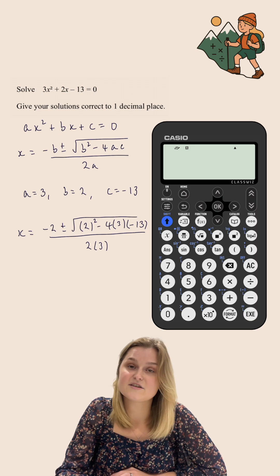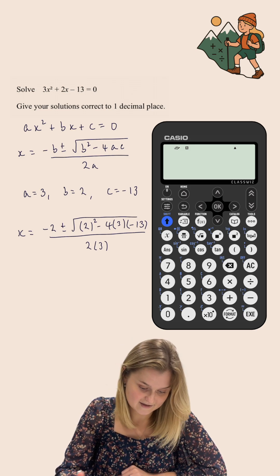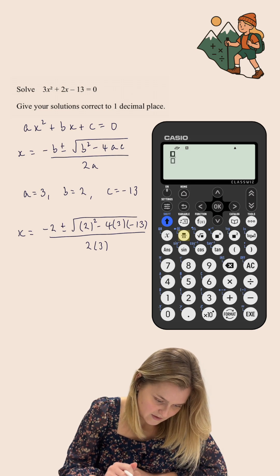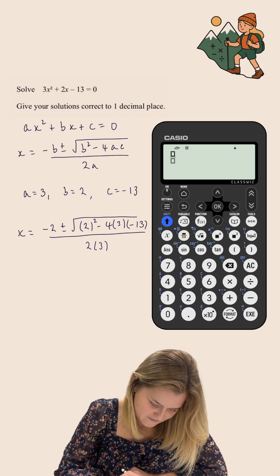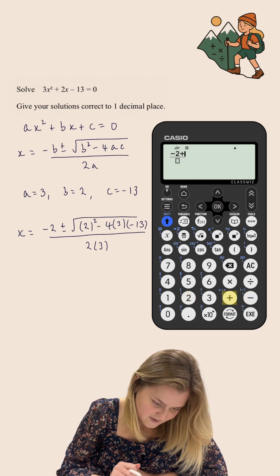I'm going to use my calculator and input this, making sure we use brackets where brackets are needed. I'll put the fraction button first, then negative b which is -2 plus,